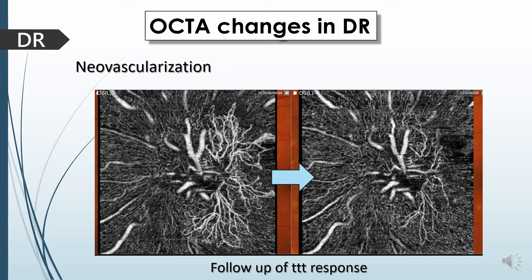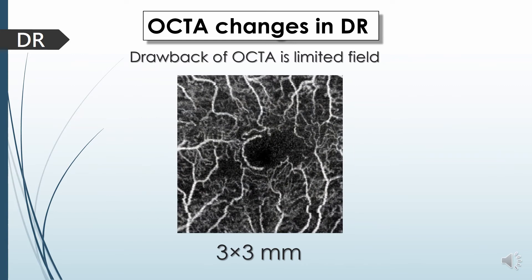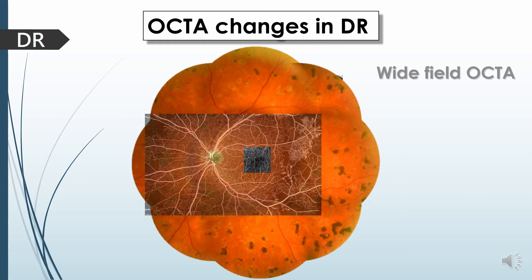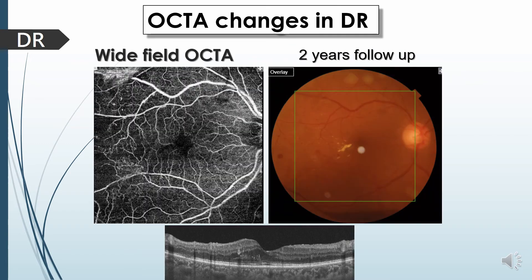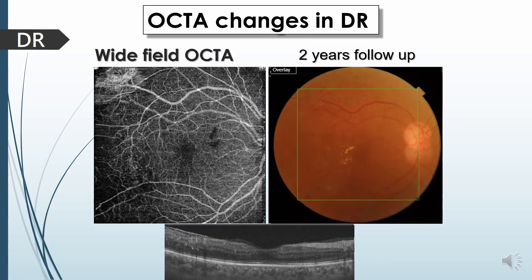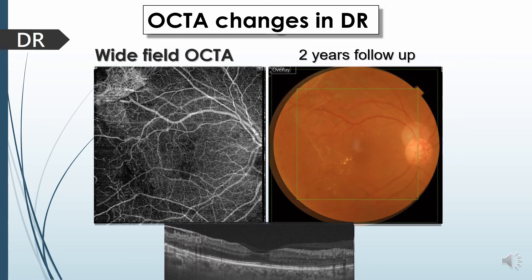One of the main drawbacks of OCT angiography is the limited field of evaluation; however, with the evolution of this technology and wide-field OCT-A imaging using 12x12 scans, we can combine these images and evaluate the retina up to the mid-periphery. We can repeat OCT imaging safely to follow up PDR patients, detecting ischemic changes involving the temporal macula, the foveal avascular zone, and the involution of neovascular tufts replaced by fibrous tractional membrane.